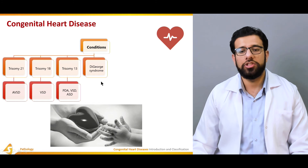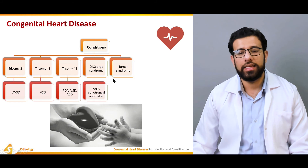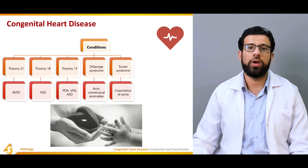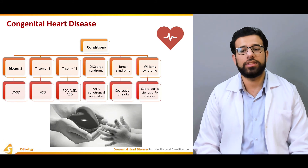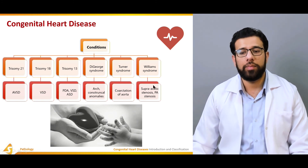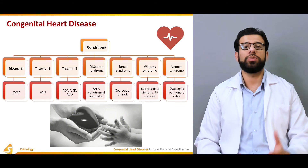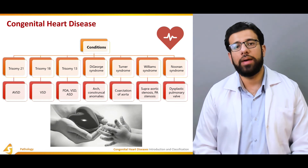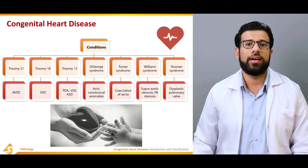DiGeorge syndrome is associated with conotruncal anomalies. Turner syndrome is more related to coarctation of the aorta. Williams syndrome is associated with supravalvular aortic stenosis and pulmonary stenosis. Noonan syndrome is related to dysplastic pulmonary valve. These are all genetic disorders and chromosomal abnormalities that lead to different types of congenital heart diseases.